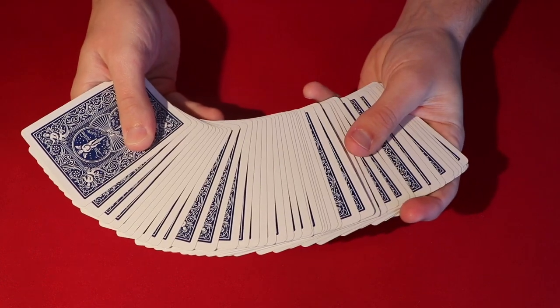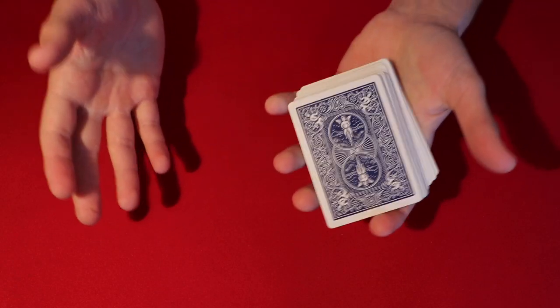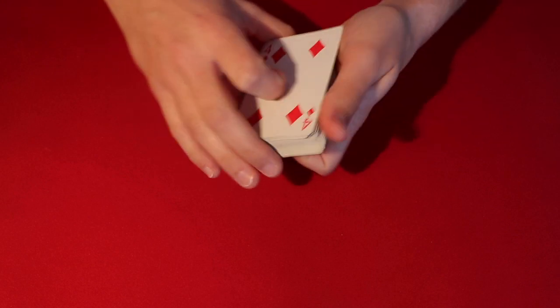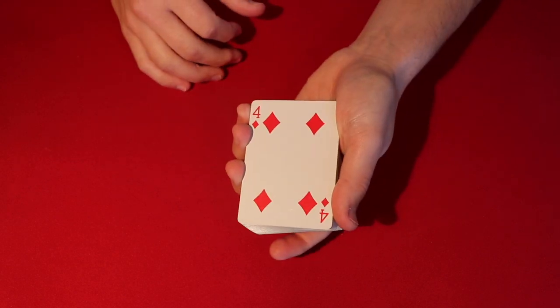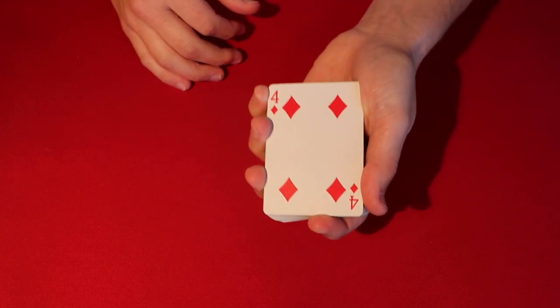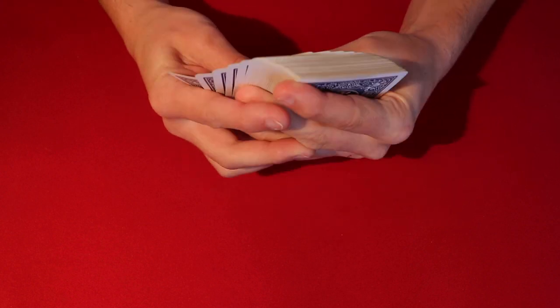And the next thing you want to do is you have to tell the spectators that you are going to make a prediction. So here's how it works. So you have the four on the bottom. And what you have to do is count to the fourth card.